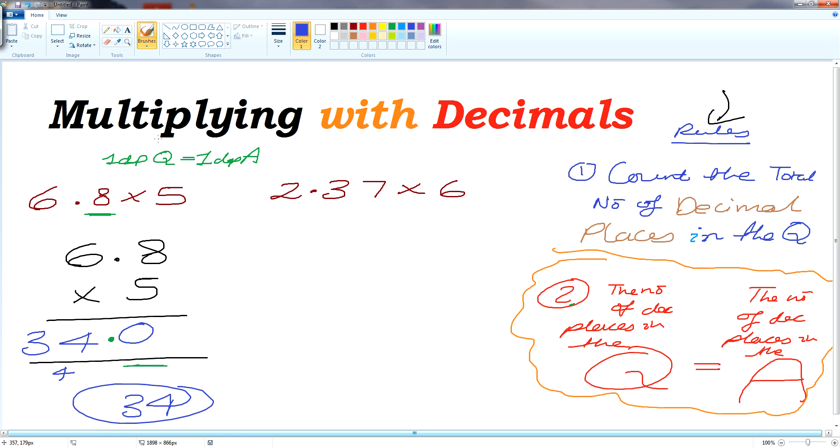Next question. Still on a simple multiplication question. We're not doing long multiplication. Short multiplication here. Next example. 2.37 times by 6. Let's write that out in the standard format.